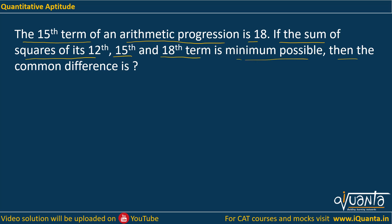So the 15th term is 18, so a + 14d will be equal to 18. We need to find out the sum of squares of the 12th, 15th, and 18th terms.